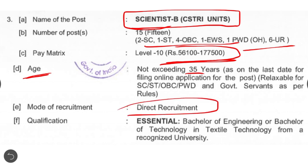Qualifications for the Scientist B CSTRI post: Bachelor of Engineering or Bachelor of Technology in Textile Technology from a recognized university is essential. BSc graduates can also apply here but must be specialized in Textile Technology.